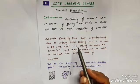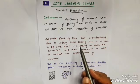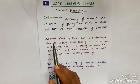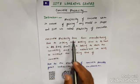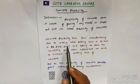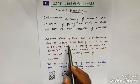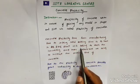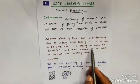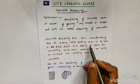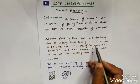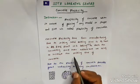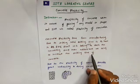When the concrete can mold into any shape or any size, that is called plasticity. The concrete plasticity time from manufacturing to initial setting time is one hour. In an RMC plant, it takes time to reach the concrete pumps, and admixtures are used to increase the setting time of concrete.